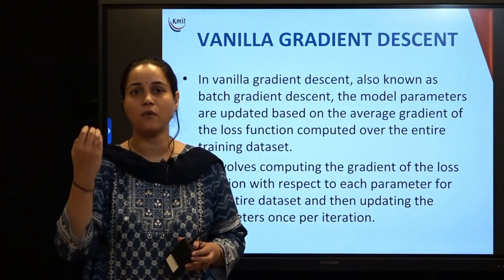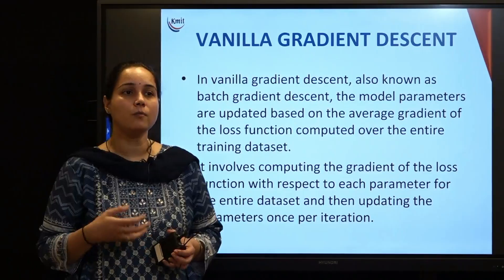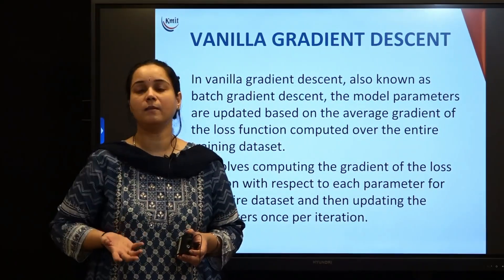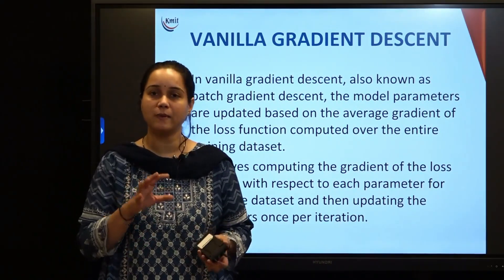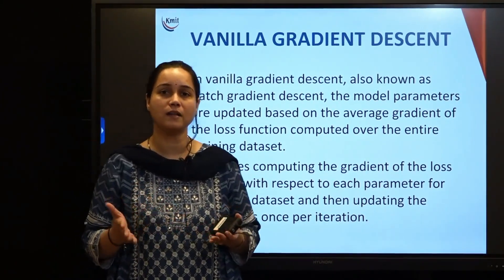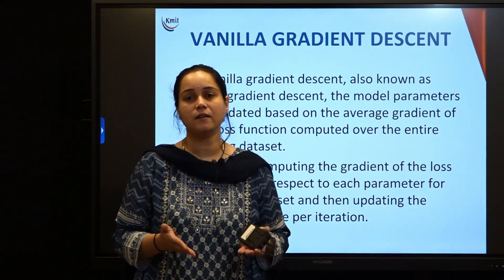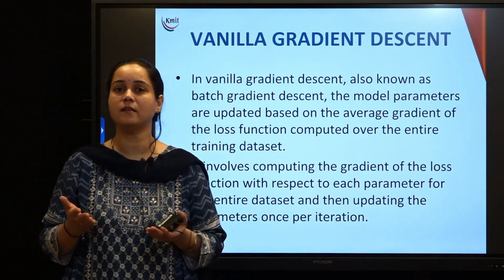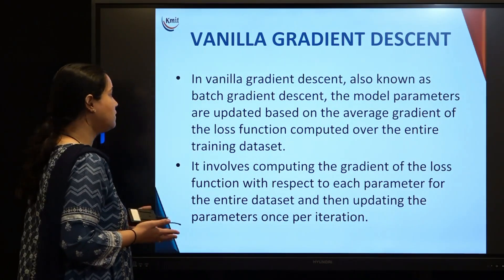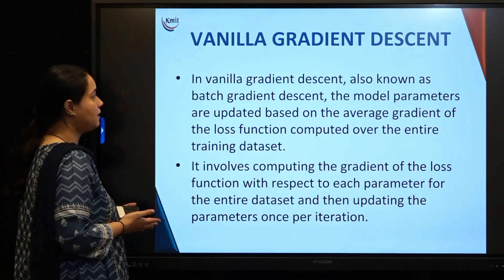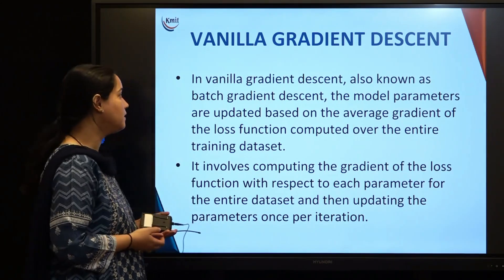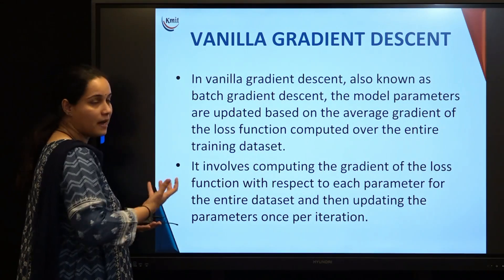Now moving on to the different types of gradient descent. The updating formula is the same across all types, but they differ in how many inputs are taken at a time and when parameters are updated. Broadly, they are classified as vanilla gradient descent, stochastic gradient descent, and mini-batch gradient descent.